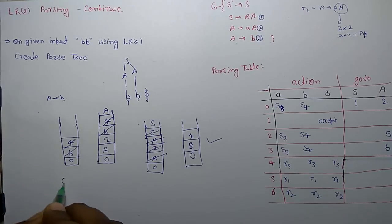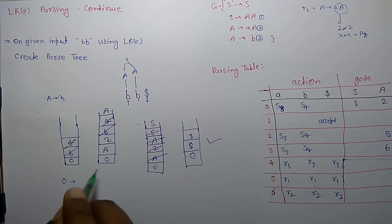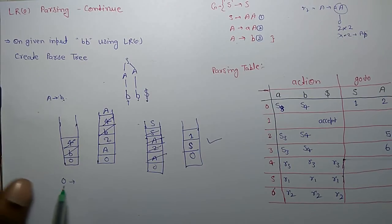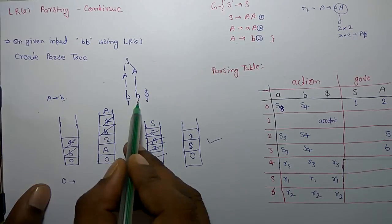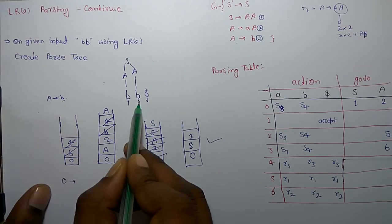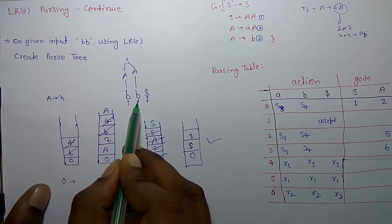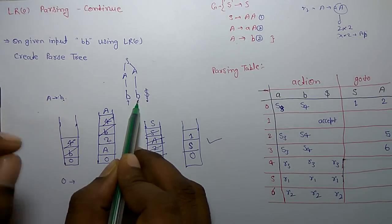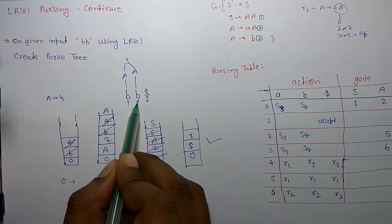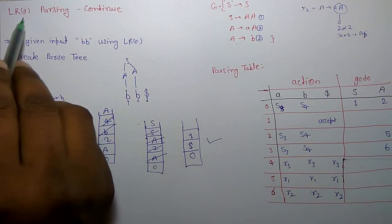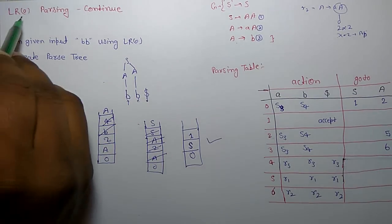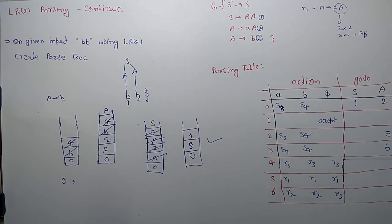The meaning of 0 in LR(0) is not that no symbol is used. The meaning of 0 is that you stay only on the current symbol you are reading; you do not read the next symbol and reduce on the previous one. That is why we call it 0 look-ahead symbol. This is the LR(0) parsing method.